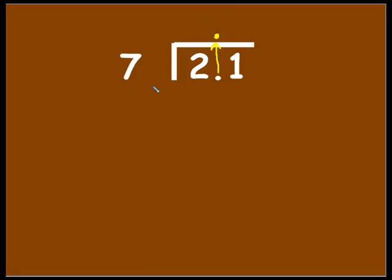We're going to go through our normal steps of division. We're going to try to see if 7 can go into 2, and we know that 2 cannot be divided by 7, so we're going to move on. We're going to go ahead and put a 0 here, because we have our decimal. We're going to move on and grab both of these digits and see how many times 7 will go into 21.